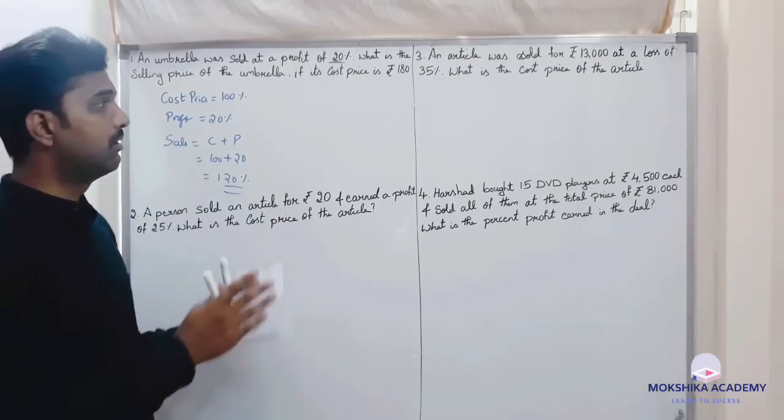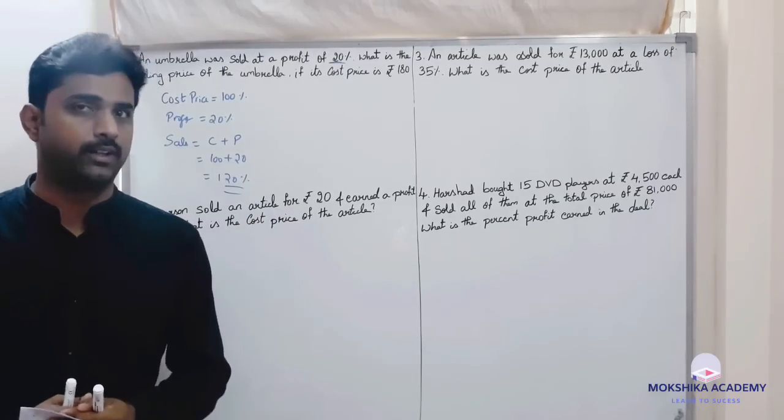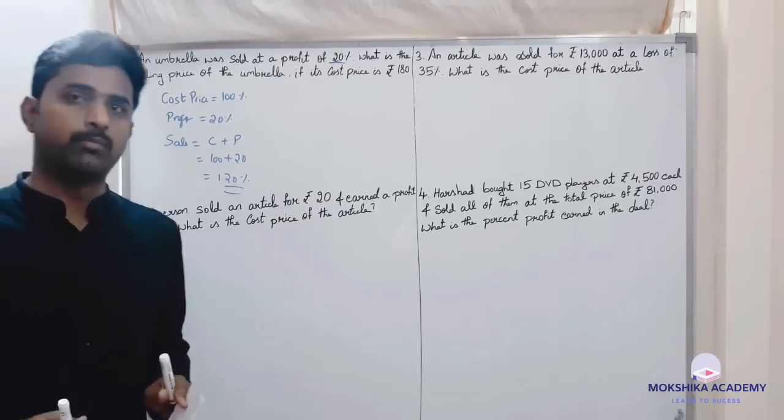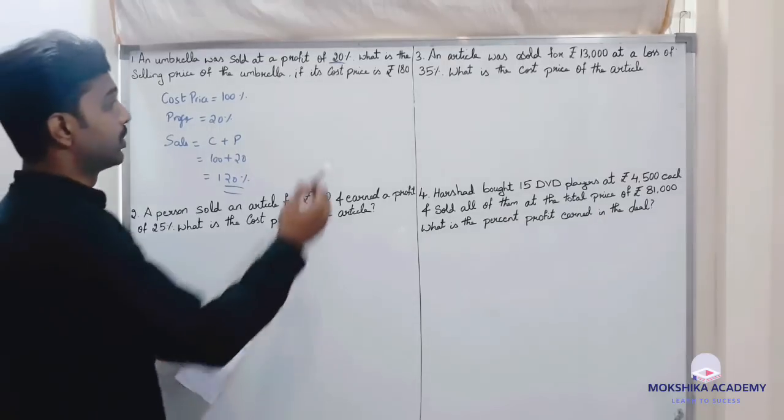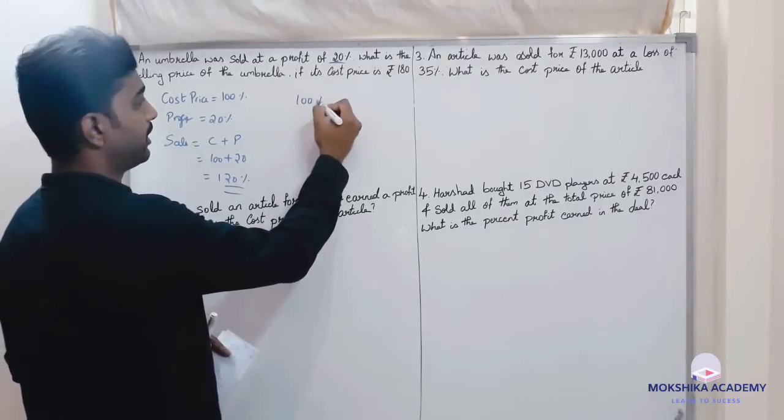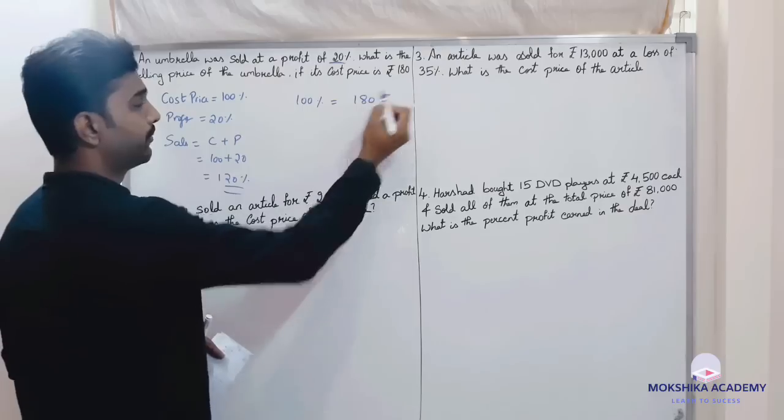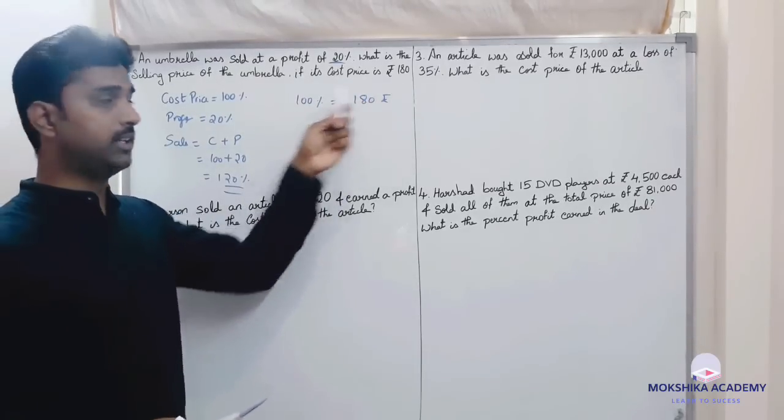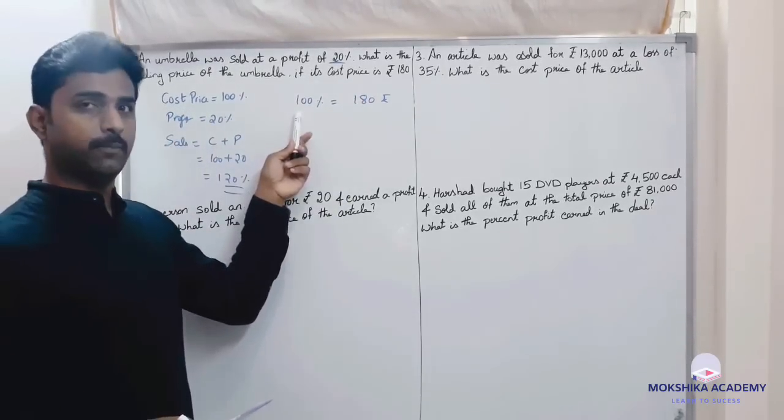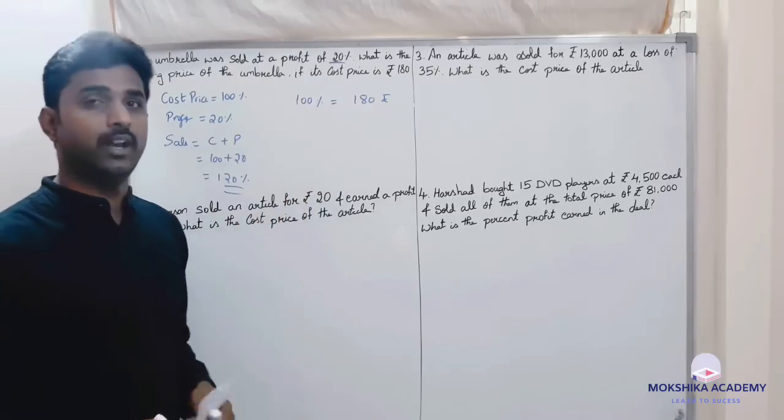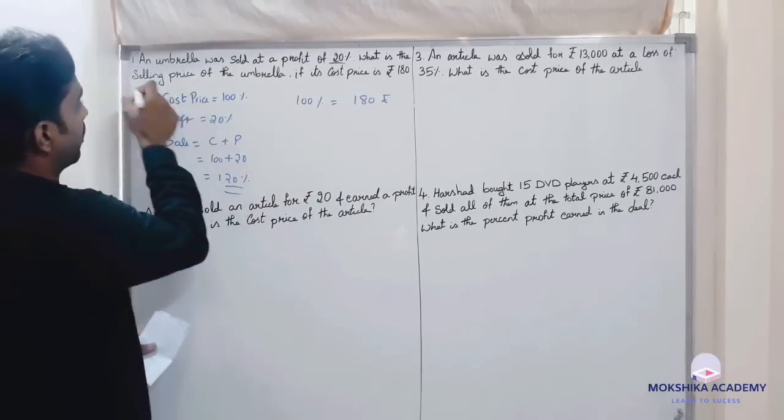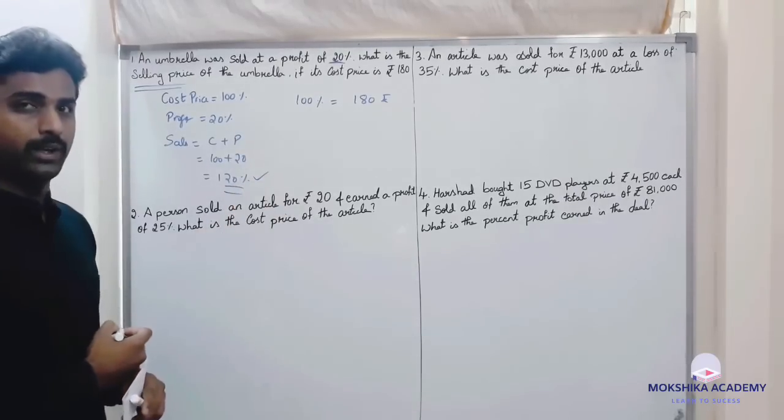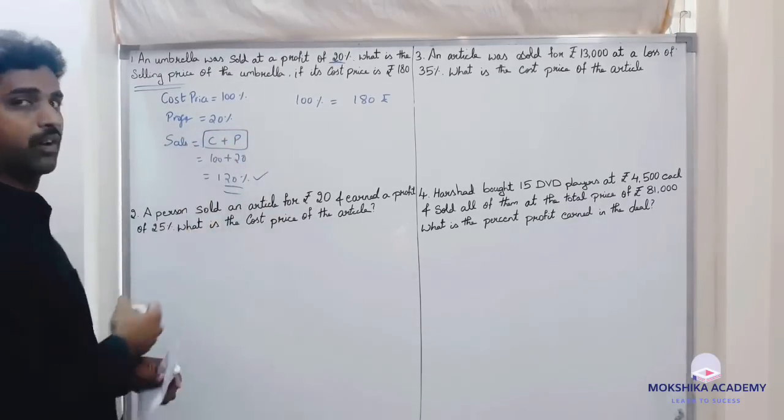So always remember that cost price is 100 percent. So you know that 100 percent is what? 180 rupees. Because cost price is 180 and the cost price is 100 percent. What is the selling price? Selling price is 120 percent. Cost plus profit.